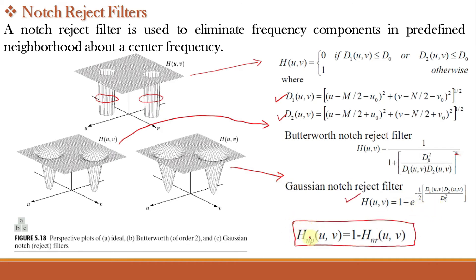The notch pass filter is the complement of the notch reject filter and is given by 1 minus the notch reject filter equation. Notably, the notch reject filter becomes a high pass filter if U0 equals 0 and V0 equals 0, because D1 and D2 become equal to D (the Euclidean distance), giving H equal to 0 if D ≤ D0 and 1 otherwise — which is the high pass filter equation. Similarly, the notch pass filter becomes a low pass filter when U0 and V0 are both 0.